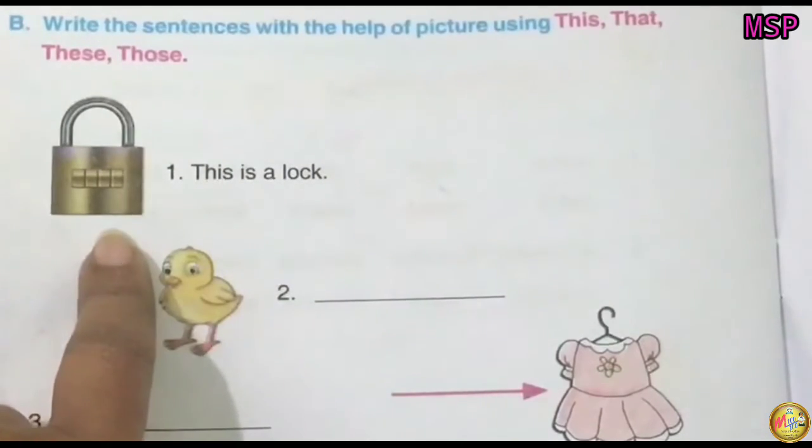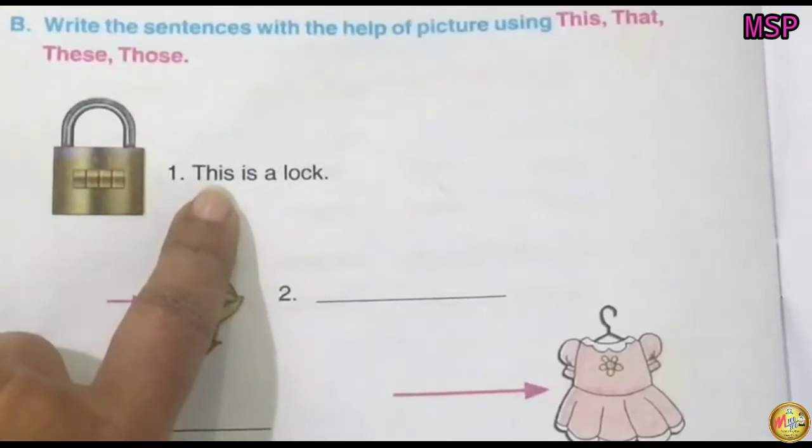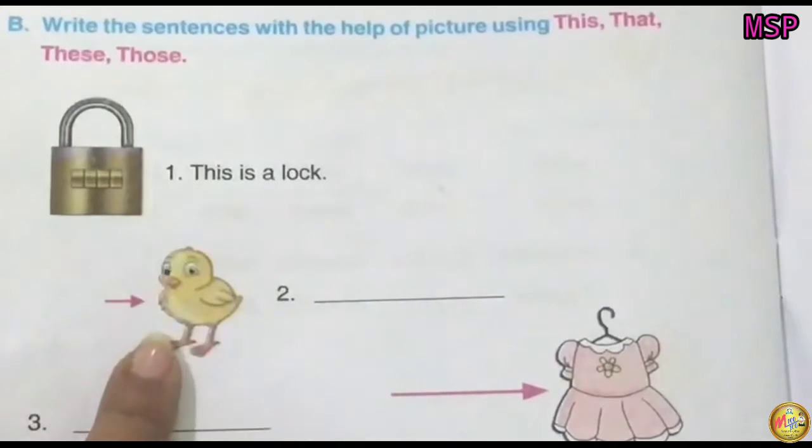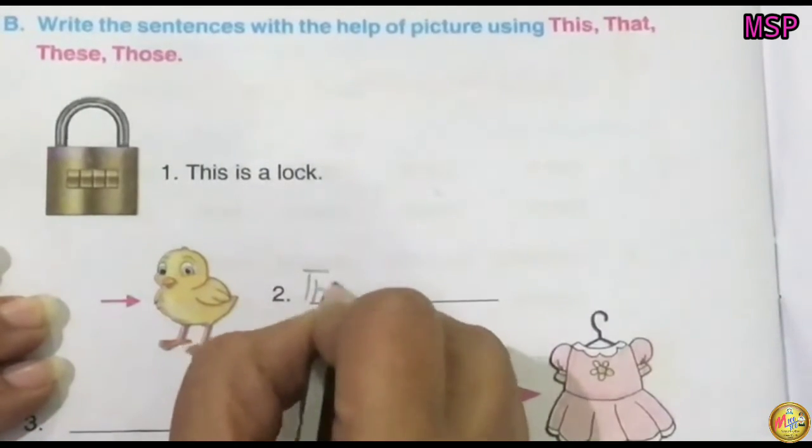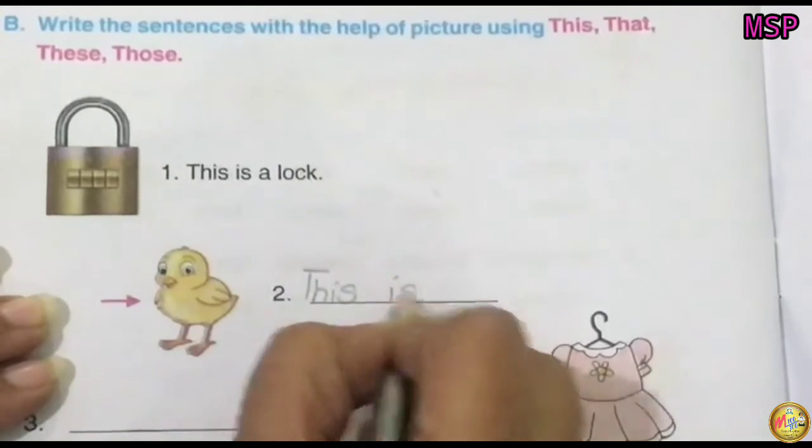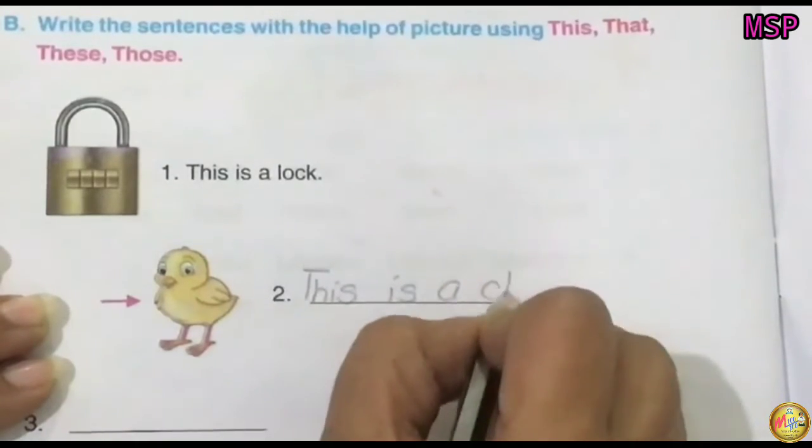Ae vita lock toh aadde neide hai, islehi ashi ade naal this ta use kita hai. Aethe tu se picture cha dekh rahe ho chik, ta aadde lehi ashi likhaan ge, kyunki ae chik saadde neide hai. This is a chick.